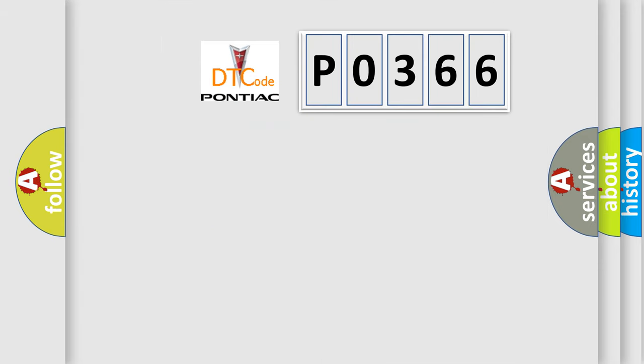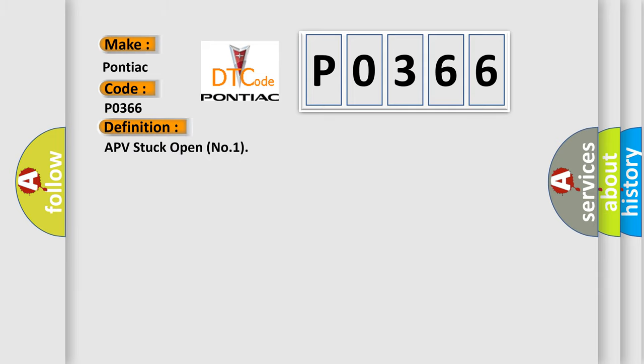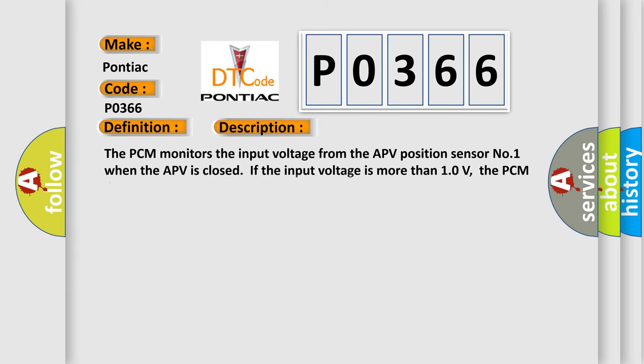So, what does the diagnostic trouble code P0366 interpret specifically for Pontiac car manufacturers? The basic definition is APV stuck open number one. The PCM monitors the input voltage from the APV position sensor number one when the APV is closed. If the input voltage is more than 10 volts, the PCM determines that the APV is stuck open.